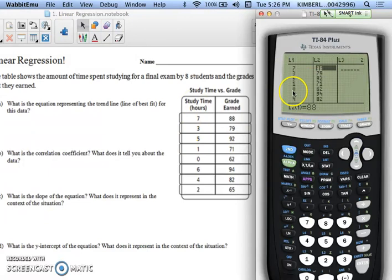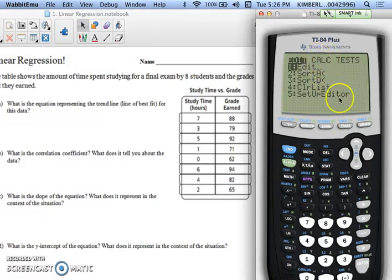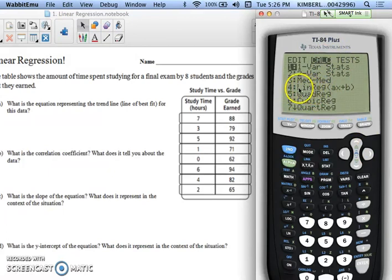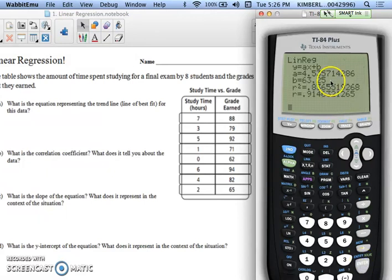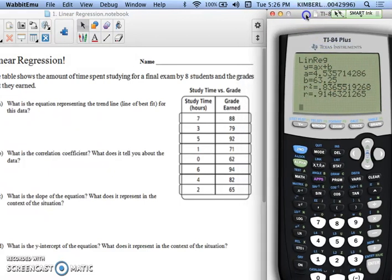Once you have your table typed in, you're going to repress stat. Now I need to calculate something, so I'm going to go over and press the right button to calculate. This topic is on linear regression, so we're going to press 4, or you can scroll down to 4 and hit enter. Your calculator says something different. It says L1, L2, something else. Make sure it says L1 and L2, and then you just scroll all the way down to hit the calculate button. If you need help with that, please raise your hand. Otherwise, you should get something that looks like this on your screen.